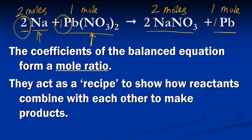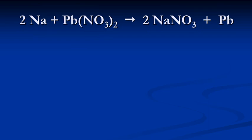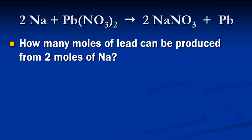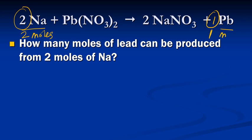Here is the equation again. The question asks: how many moles of lead (Pb) can be produced from two moles of sodium (Na)? Looking at the balanced equation, we see that it's a two to one ratio of sodium to lead. So if we start with two moles of sodium, we're going to have one mole of lead produced. Just look at the coefficients — two to one — so two moles of sodium to one mole of lead.